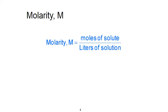Molarity is one of the most common expressions of concentration used in chemistry. It's defined as the ratio of moles of solute per liter of solution. The unit is often expressed as a capital M, and it's important to remember that this symbol simply stands for the ratio of moles of solute per liter of solution.